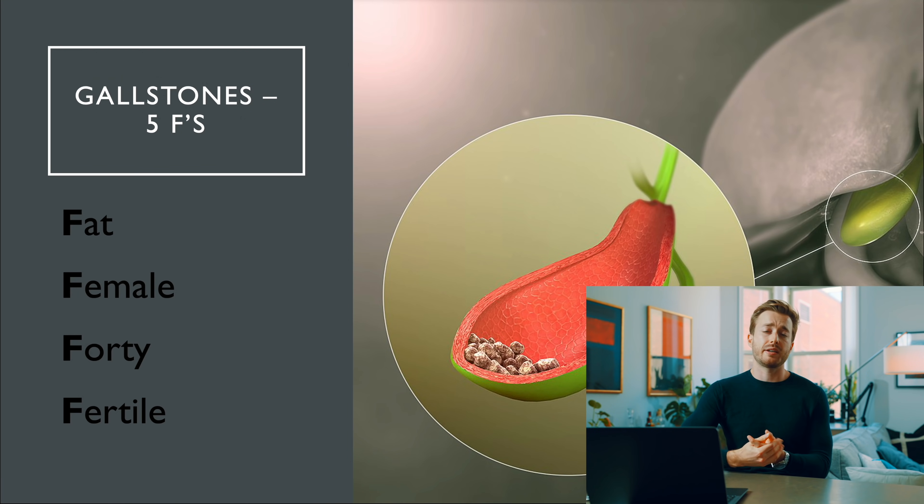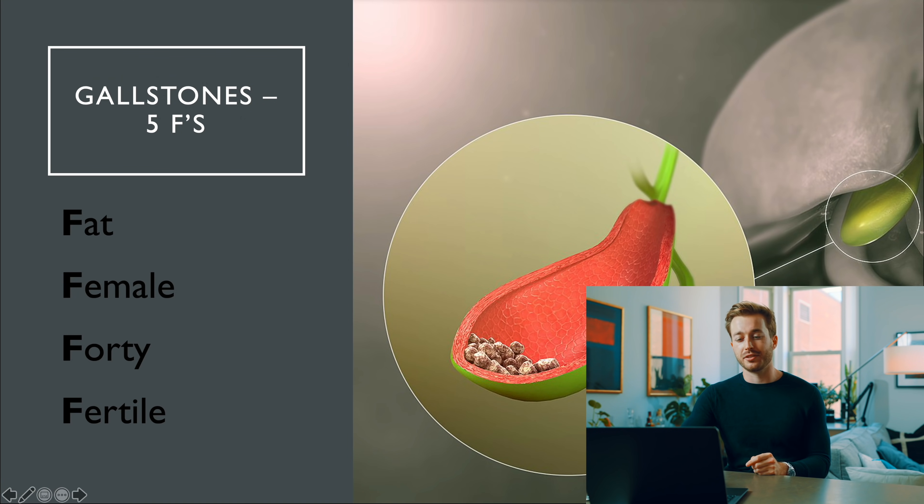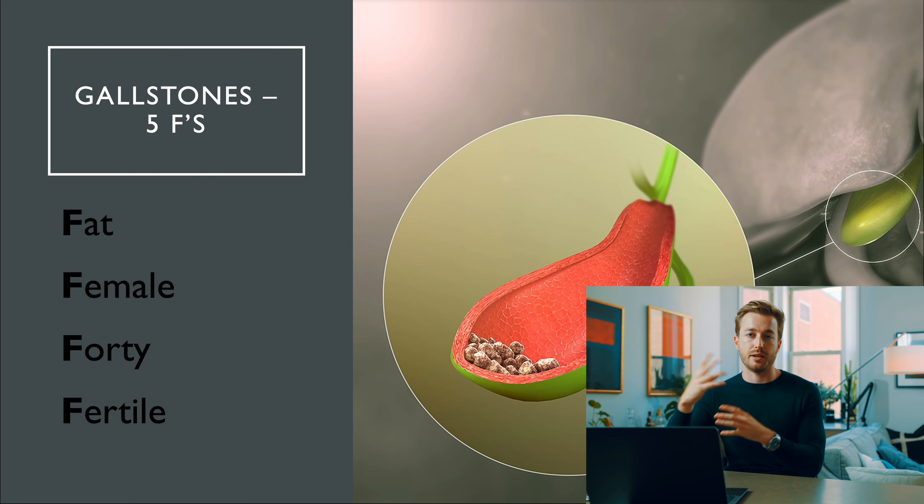Everyone loves gallstones. Your gallbladder stores bile, but sometimes bile hardens into stone-like material. The people more likely to get gallstones are remembered by the 4 F's: forty, female, fertile, and fat.